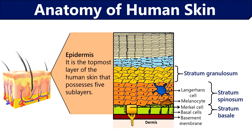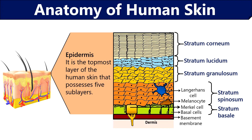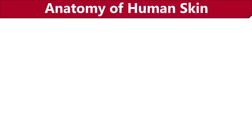The old keratinocytes further move upwards. Stratum lucidum is the fourth layer, present only in thick skin like the palm and sole of the feet. Stratum corneum is the thickest top layer of the epidermis, containing dead and flattened corneocytes. The dead cells in this region shed off after every 28 to 30 days.